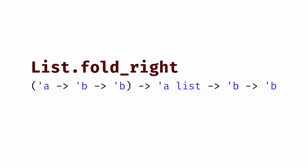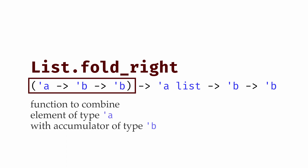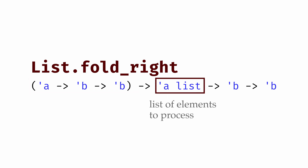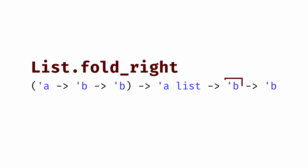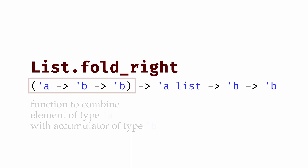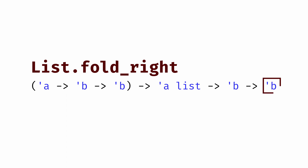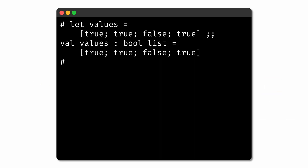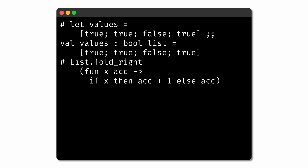The list.foldRight function is very similar, but it uses a binary function to process elements in a list from right to left instead of left to right. We take an initial list where each element has type alpha, and we have an initial value for the accumulator of type beta. The binary function takes the current element of type alpha and the current value of the accumulator of type beta, and returns a new value for the accumulator of type beta. At the end, we end up with a final value for the accumulator of type beta. We could write our function to count true values using foldRight as well, though there may be other problems where one or the other ends up making for a simpler or cleaner solution.